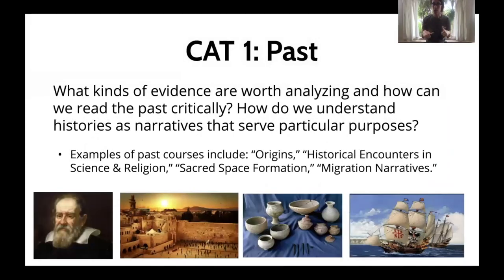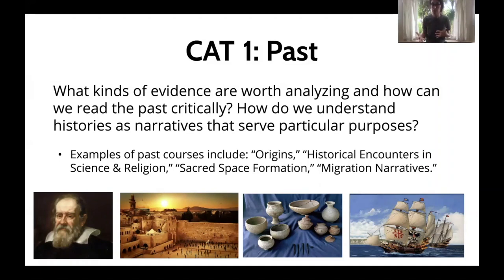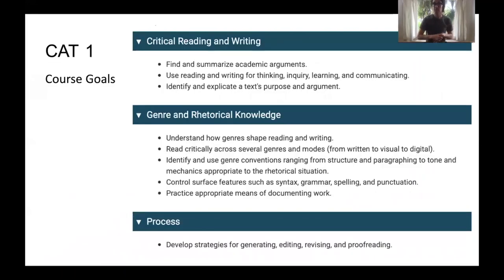CAT 1 is four units. It is not a writing intensive class — it's kind of the pre-writing intensive class. All the topics are about the past in some way, shape, or form. Some of the questions we're asking are: what kinds of evidence are worth analyzing, how can we read the past critically, how do we understand histories as narratives that serve particular purposes? So history not as something that exists as truth, but history as a construction — historical narratives working towards particular political and ideological purposes.